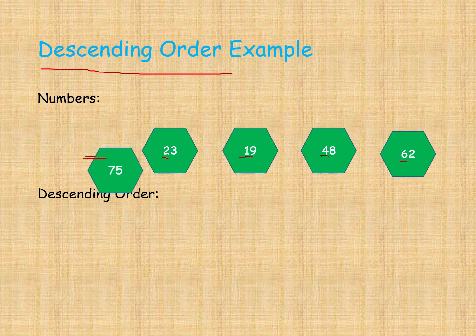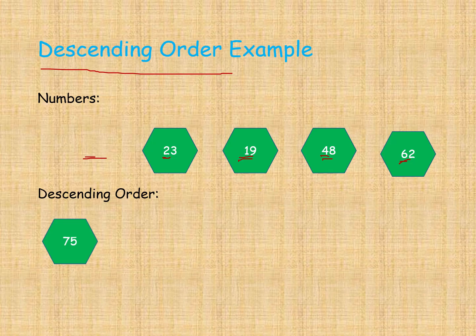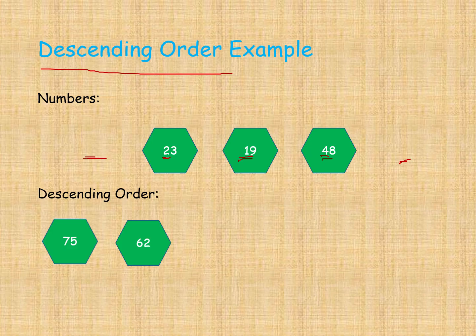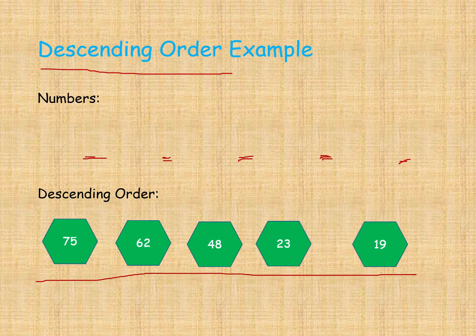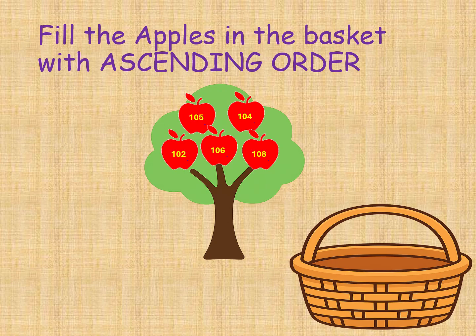Next we compare the remaining tens places: 2, 1, 4, 6. The largest is 6, so 62 comes next. Then from 23, 19, 48 — tens digits are 2, 1, 4 — the largest is 4, so 48 comes next. Then between 23 and 19, tens digits are 2 and 1, so 23 comes next, and 19 comes last. That is descending order, largest to smallest.